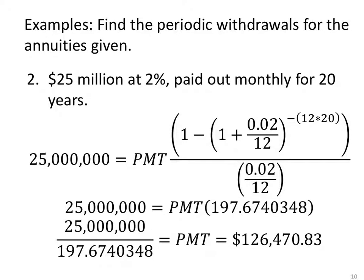What if I win $25,000,000, but it's only 2% and it's paid out monthly for 20 years? Same idea. $25,000,000 equals PMT times parentheses 1 minus and then my 1 plus i to the power of minus n. Close the parentheses on the numerator, divide by i in order to find the value of our big fraction.